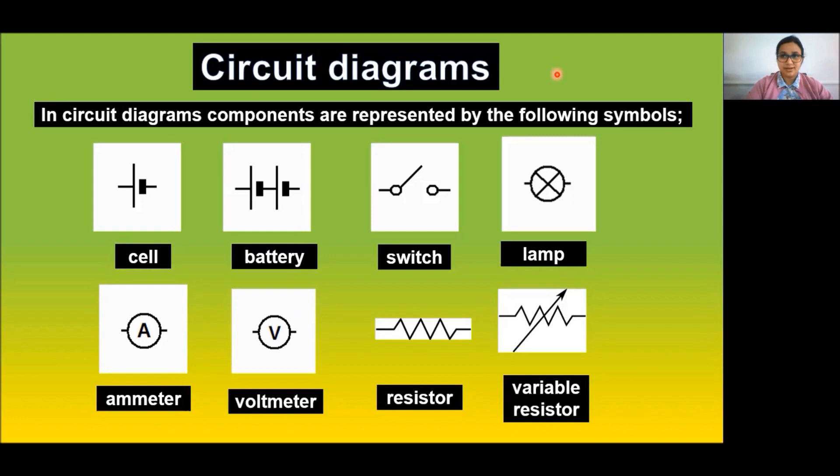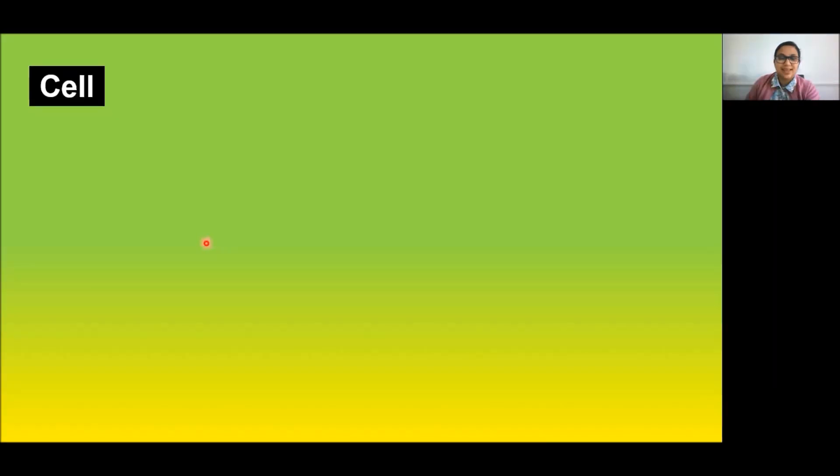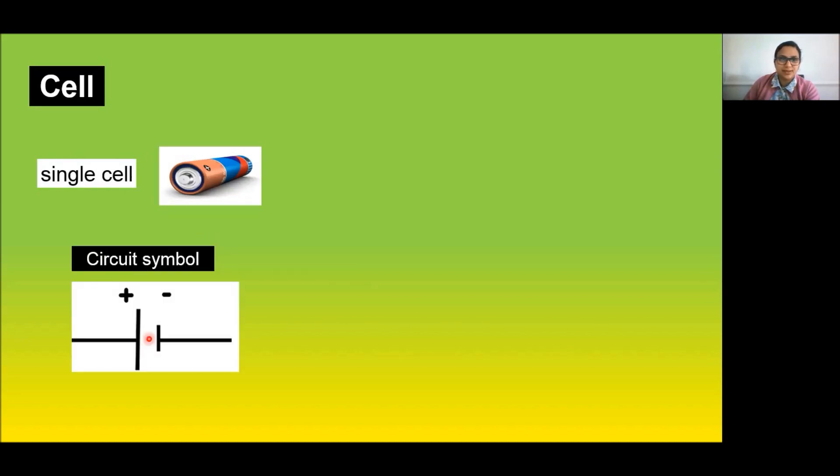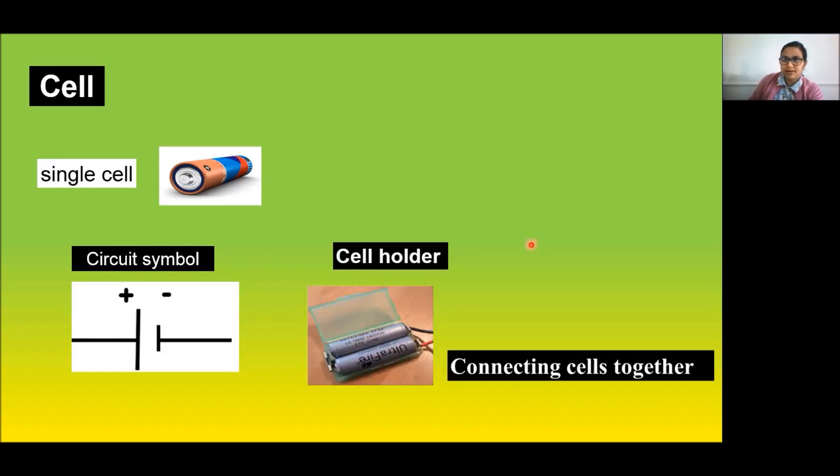In a torch, we know that the cells or battery when placed in proper order provide flow of electric charge. This is a circuit symbol for a single cell. The big line represents the positive side of the battery or cell. The small line indicates the negative side. This is a cell holder. When three cells are connected together, we can draw the circuit symbol as follows.